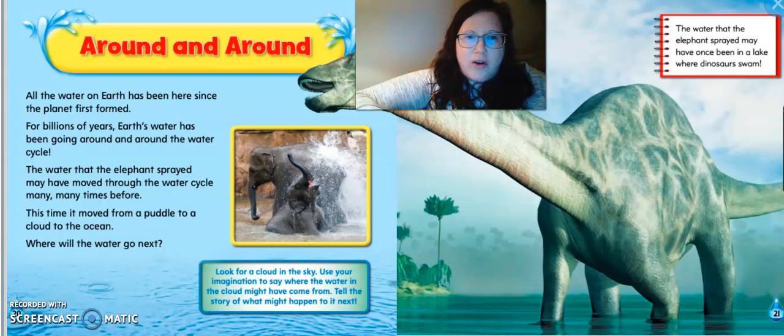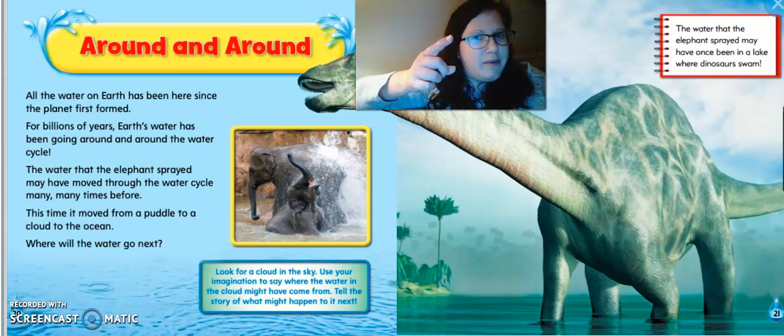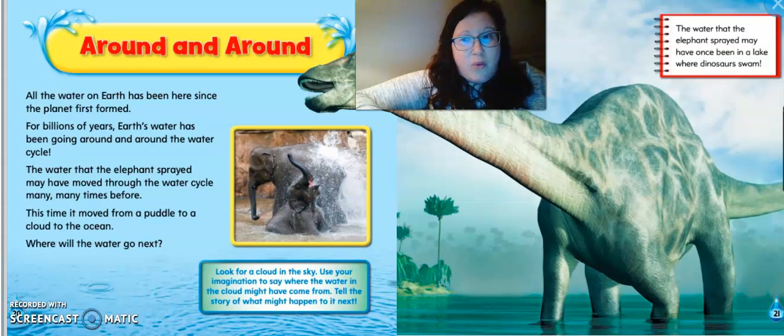Around and around. All the water on earth has been here since the planet first formed. For billions of years, earth water has been going around and around the water cycle. The water that the elephant sprayed may have moved through the water cycle many, many times before. This time it moved from the puddle to the cloud to the ocean. Where will it go next? Look for a cloud in the sky. Use your imagination to say where the water and the cloud might have come from. Then tell a story of what might happen next to it. So if you want to write a story about a rain droplet coming from a cloud where it lands and what happens to it, go ahead and be creative. Hey, the water that the elephant sprayed may have once been in a lake where a dinosaur swam. Oh my goodness. That's amazing.